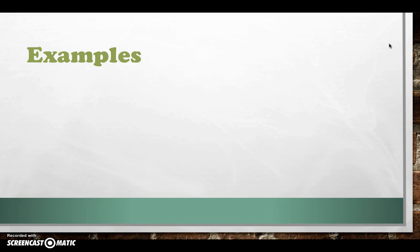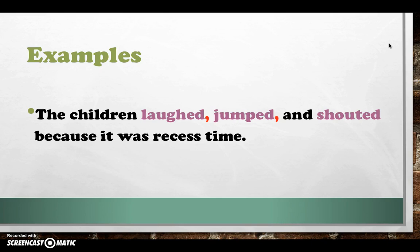Here is an example. Are you ready? Get set. Here we go. The children laughed, jumped, and shouted because it was recess time. I have three verbs there: laughed, jumped, and shouted. I put a comma after laughed, a comma after jumped, but I did not put a comma after 'and'.